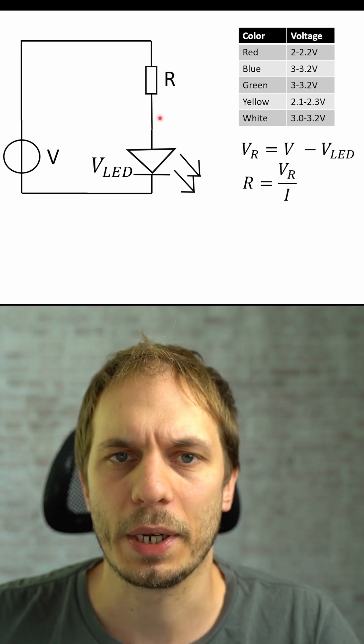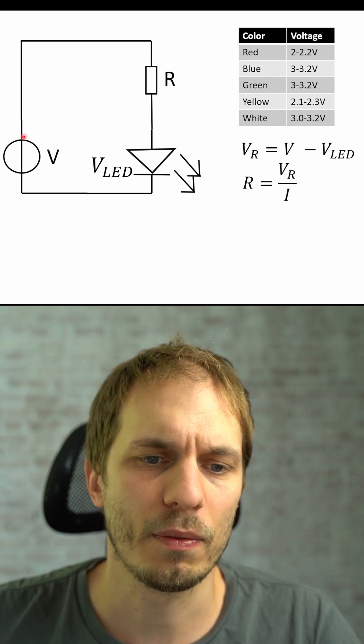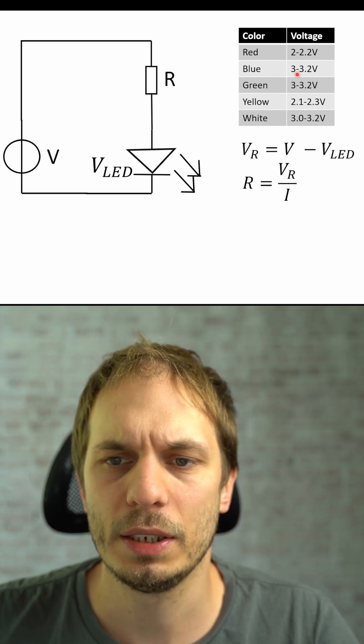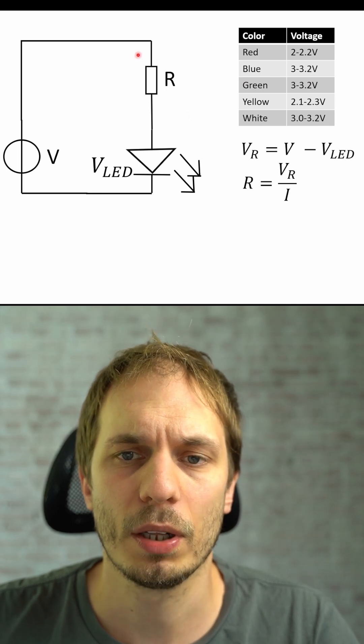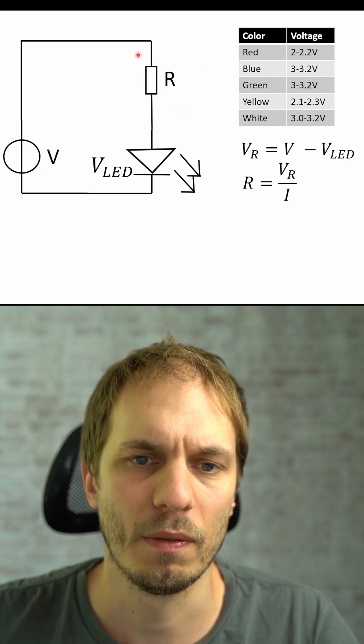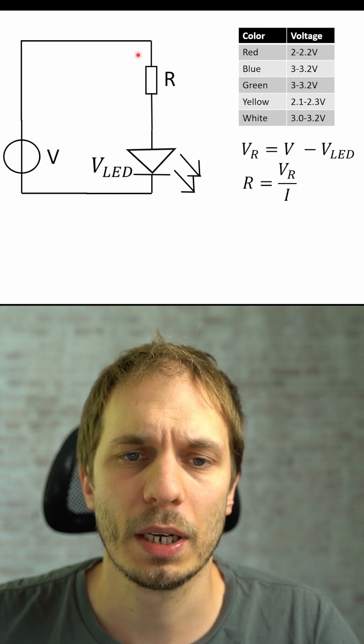So just make a quick example: we have a 5 volt supply and we have a green LED with 3 volt. We have a voltage over the resistor with 2 volt, and with 20 milliamps that gives us 100 ohm.